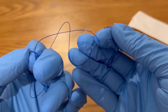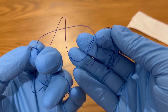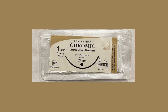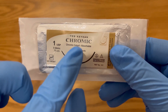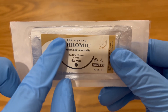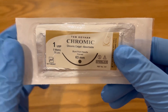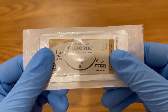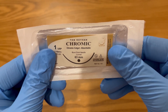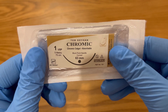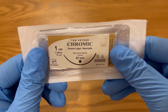Let's see chromic suture. Both the packaging and thread are brown. It's mostly used for circumcision and liver laceration in trauma, and it's absorbable.